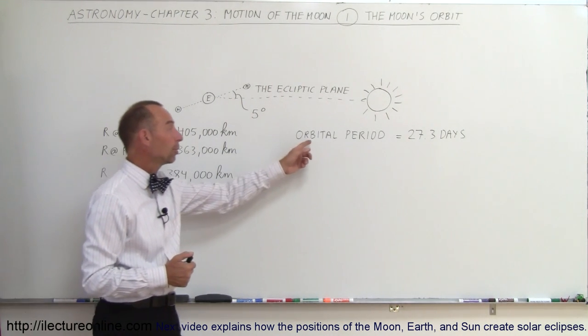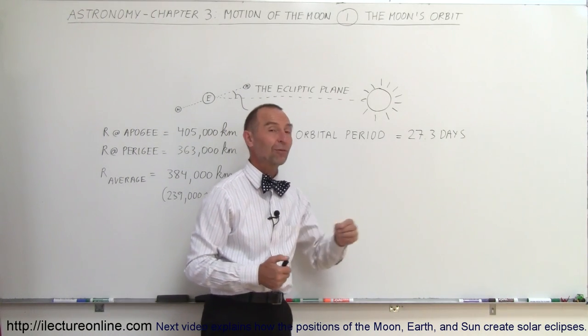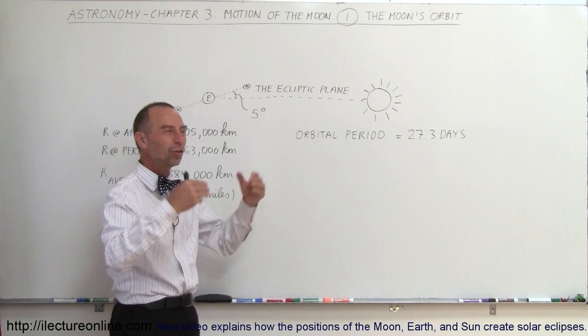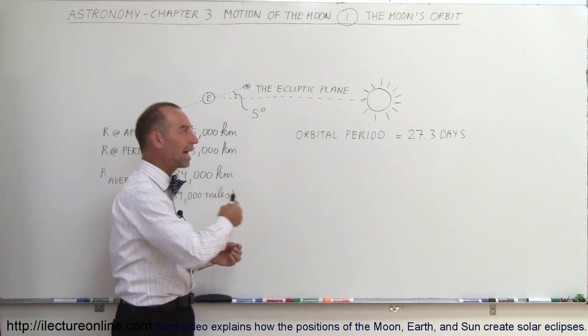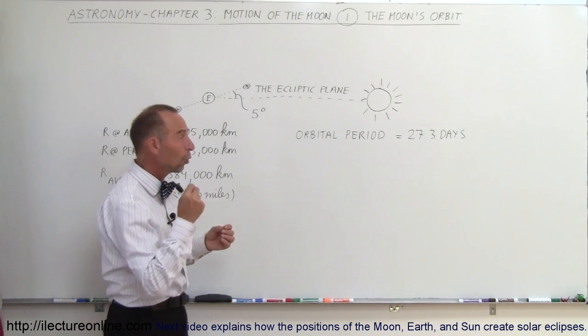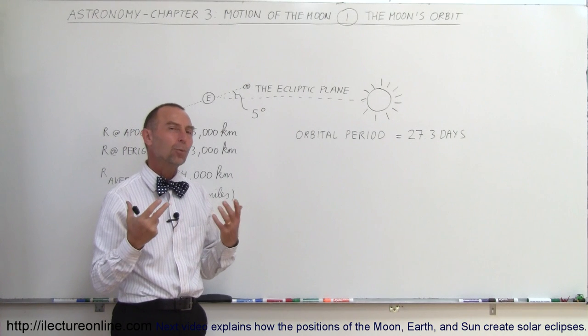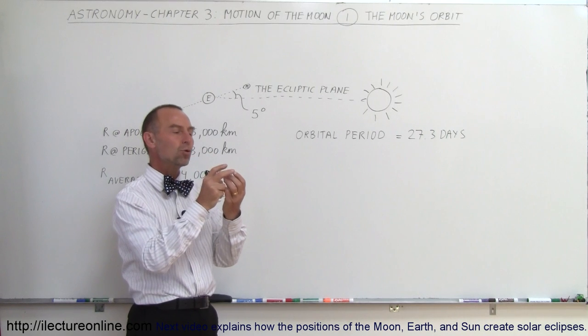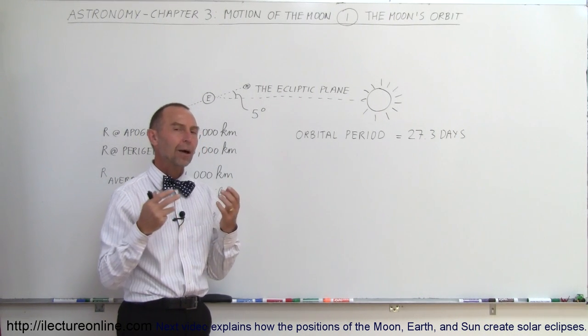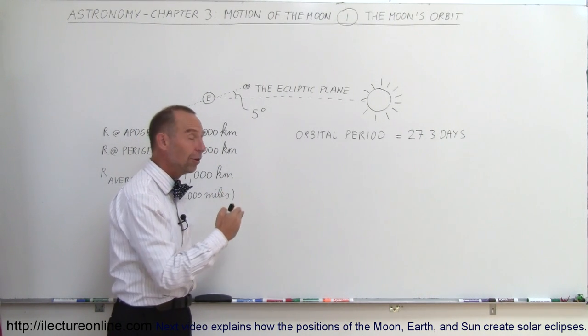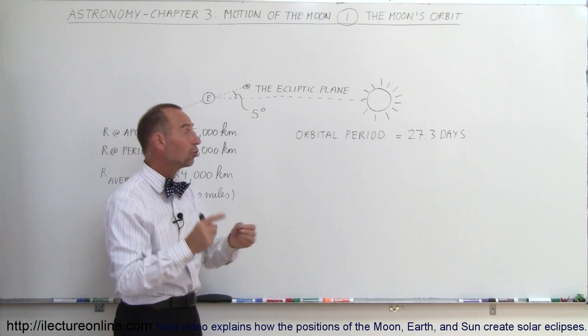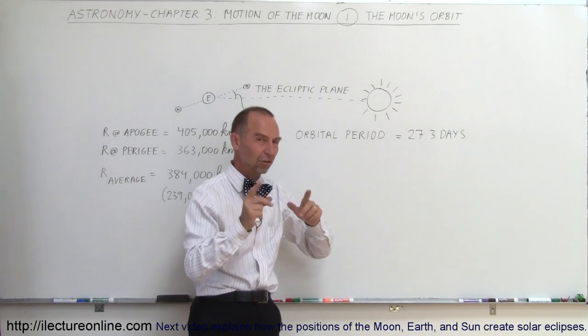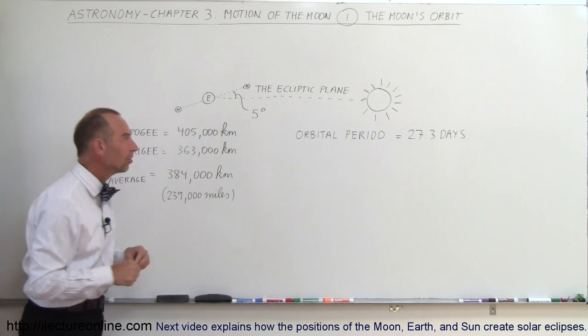Also notice that the orbital period is about 27.3 days. We call that the sidereal month because that's relative to the stars. It takes the Moon exactly 27.3 days to go once around the Earth. That's kind of where the term month comes from. It's relative to the time that it takes for the Moon to go around the Earth. Now, what we'll see in the future is that the phases of the Moon don't change at an orbital period of 27.3 days. It actually takes a couple days longer, and we'll see why that is the case.